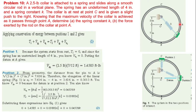Since maximum velocity occurs at point A, this means the tangential acceleration is zero at that point. When tangential acceleration is zero, only the centripetal (normal) component of acceleration remains. So at point A, only the centripetal acceleration acts on the collar.